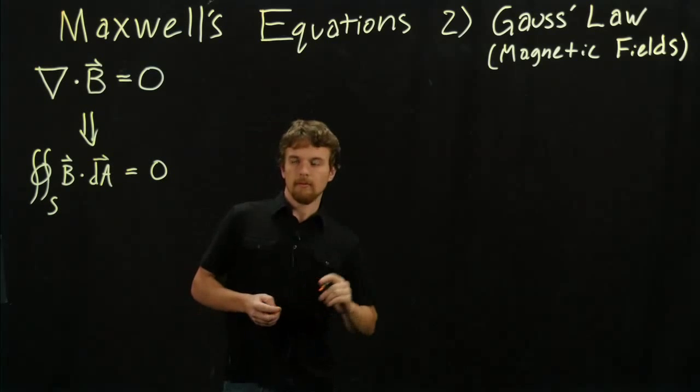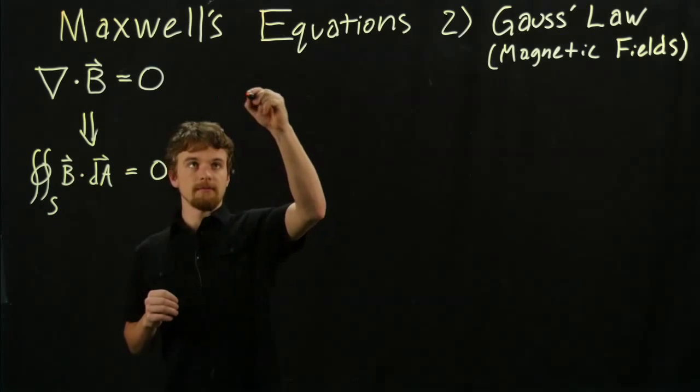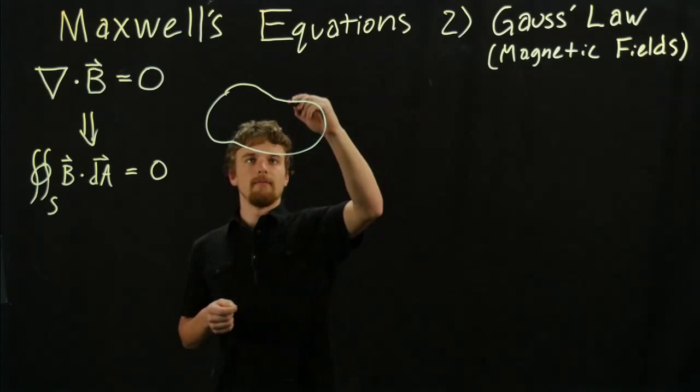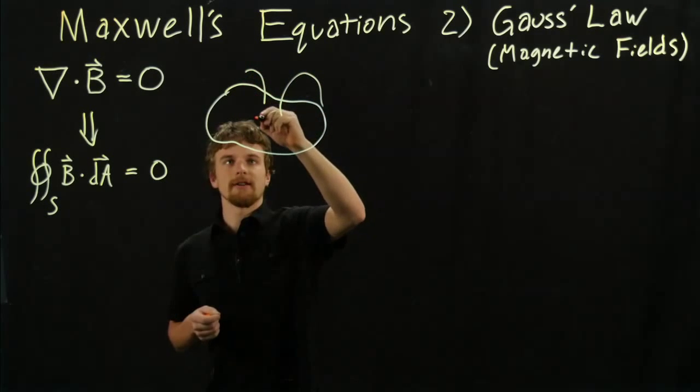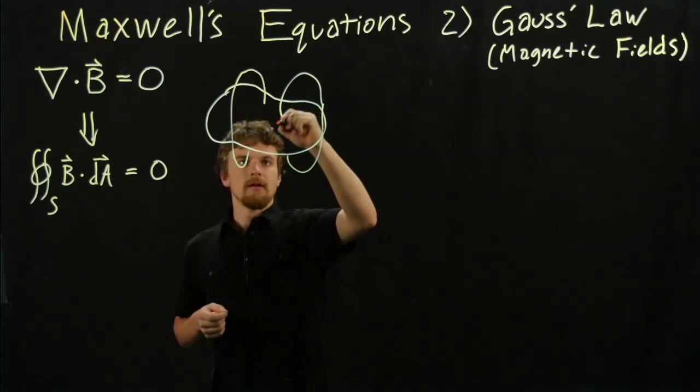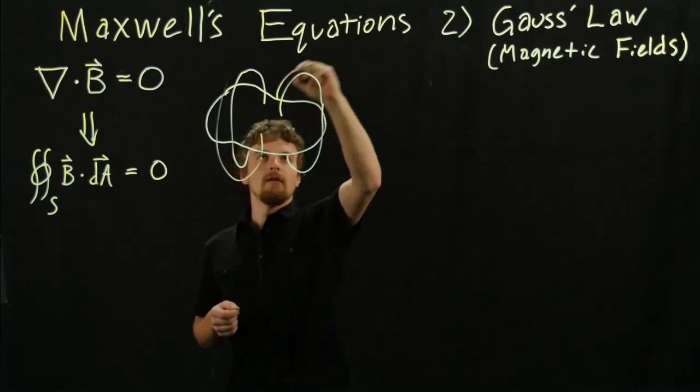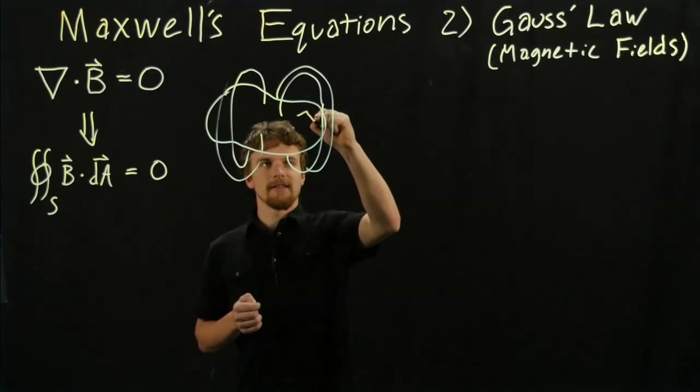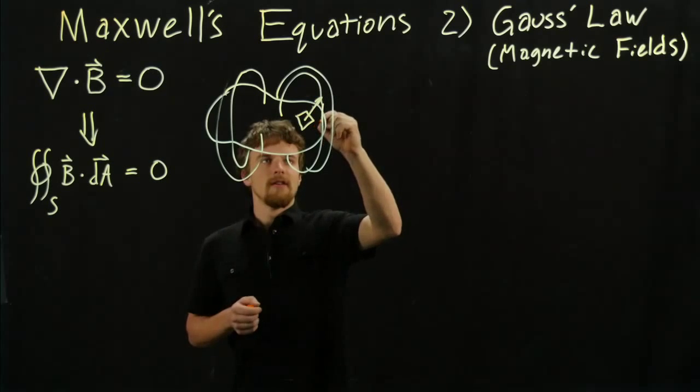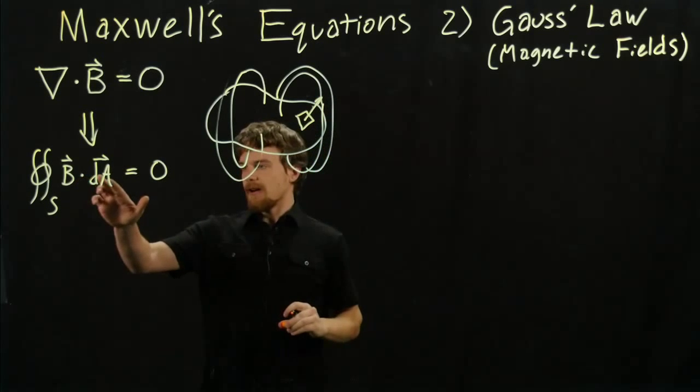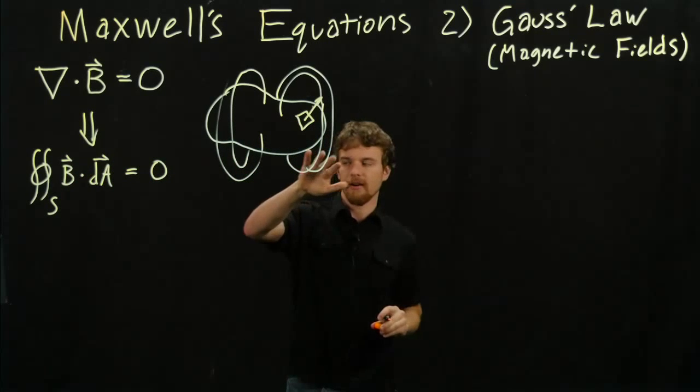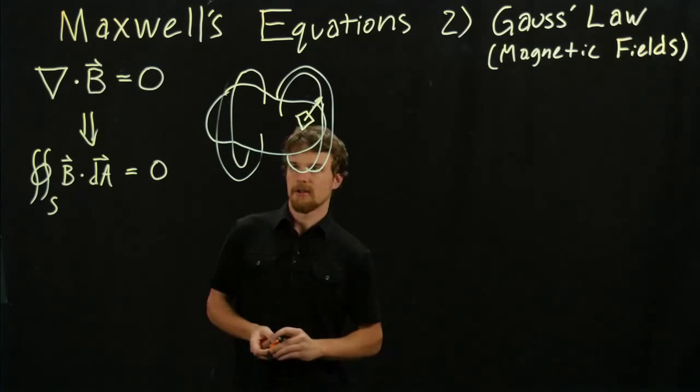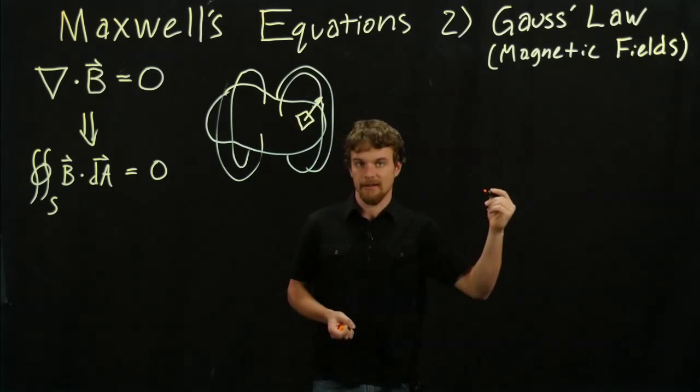What does this mean? It means if we have a shape and we have magnetic fields flowing in different directions for whatever reason, and we take all of the differential areas along the surface and we take the dot product of the magnetic field with those differential areas, and then we sum those all up around the surface, the result is going to be zero. That means there's just as much magnetic field leaving any surface as there is going into it.